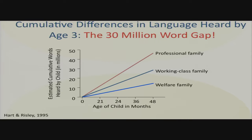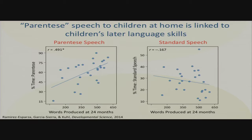I want to touch on the effects of early experience and where the lab science is going. In America, your socioeconomic status affects how many words you hear. By the age of three years, kids in welfare families hear 30 million words less than kids in professional families. There are strong associations between socioeconomic status and every measure of language we know of, particularly literacy. Our work says you can take SES out of the equation if you measure the amount of parentese. The prevalence of parentese in the home at 11 months is very strongly correlated with words produced at 24 months, whereas standard speech has no relationship whatsoever.